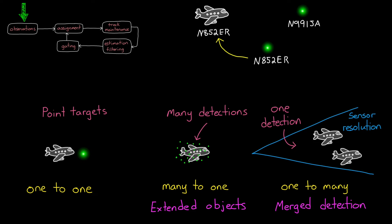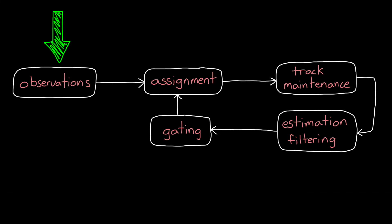Going forward in this video, we're only going to be talking about the case where we expect one detection for each tracked object. And where this is handled is in the assignment step, which is next.